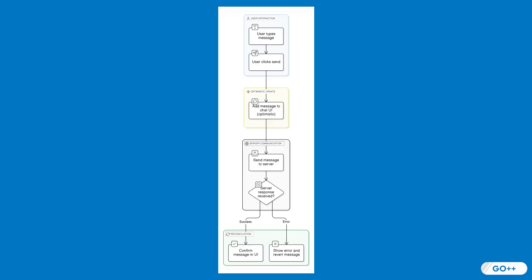However, like our restaurant scenario, if the order fails — say the dish is unavailable — the server must replace the dummy plate with the correct dish. Similarly, handling failures gracefully in Optimistic updates is crucial. In our chat application, if a message fails to send, we need to inform the user and remove the unsent message from the chat window. This ensures data consistency and maintains a reliable state between the client and server.